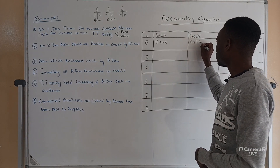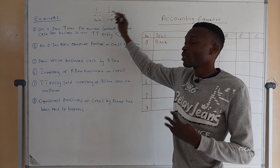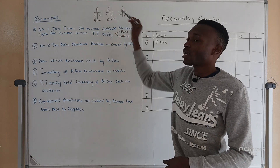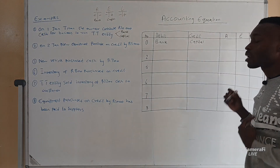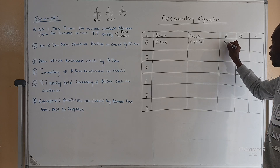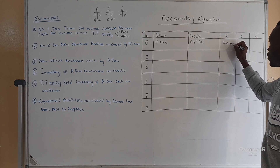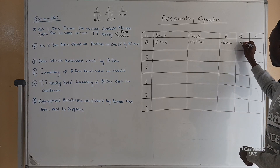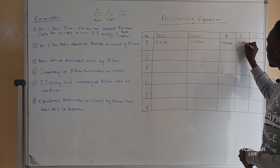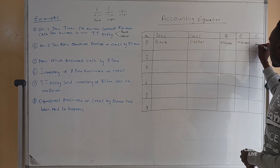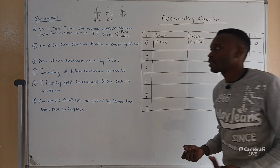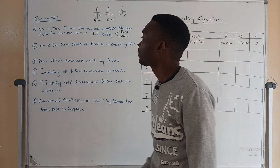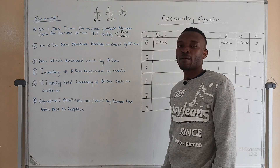Once you debit bank, you credit capital. The wealth of the owner — equity — is increasing, and equity increases on the credit side. So when we come to the table we indicate that assets of ten thousand have increased, and equity has also increased. Liability is not affected in this transaction.